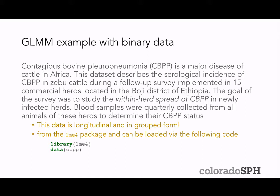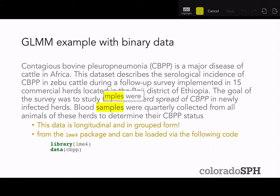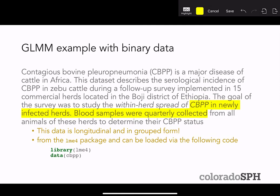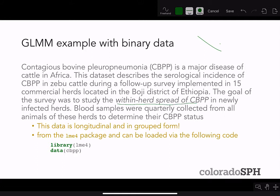The first example comes from the CBPP dataset — contagious bovine pleuro-pneumonia, which is a major disease of cattle in Africa. This data describes the incidence of CBPP in Zebu cattle during a follow-up survey implemented in 15 commercial herds in Ethiopia. The goal was to study the within-herd spread of CBPP, which indicates we're looking at a subject-specific effect where the subject or unit of observation is the herd.